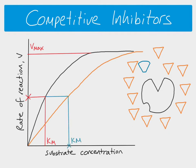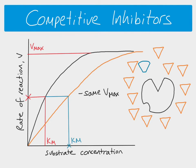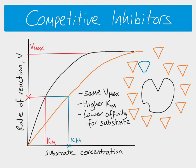If we look at Km, the Km with the competitive inhibitor is higher than without. Vmax is the same, so half Vmax is the same, but following that line to intersect with the competitive inhibitor curve gives a higher substrate concentration - a higher Km. This tells us the enzyme has a lower affinity for its substrate; you need more substrate to reach half Vmax because the substrate is competing with the inhibitor for the active site.